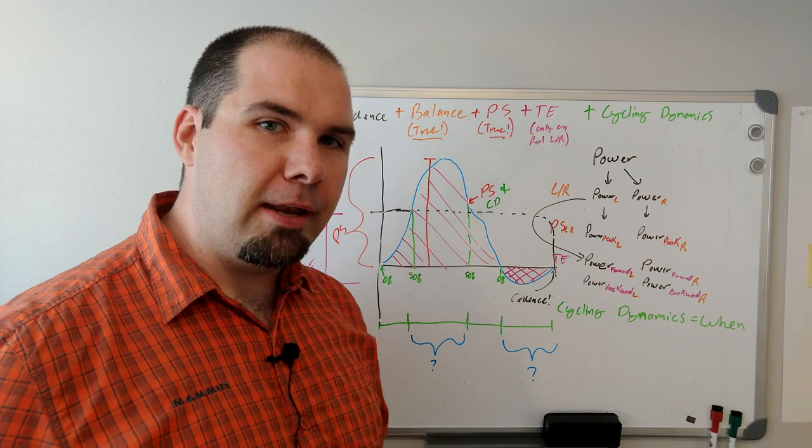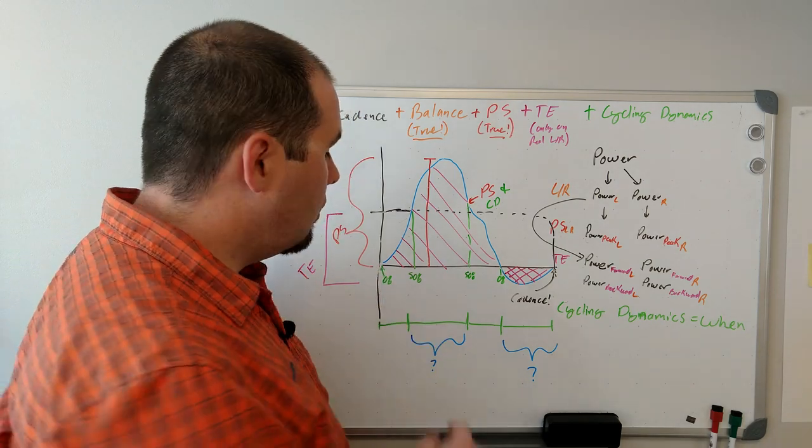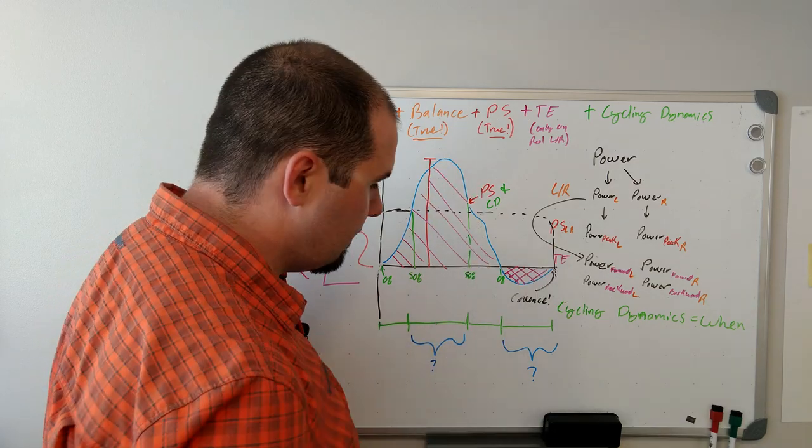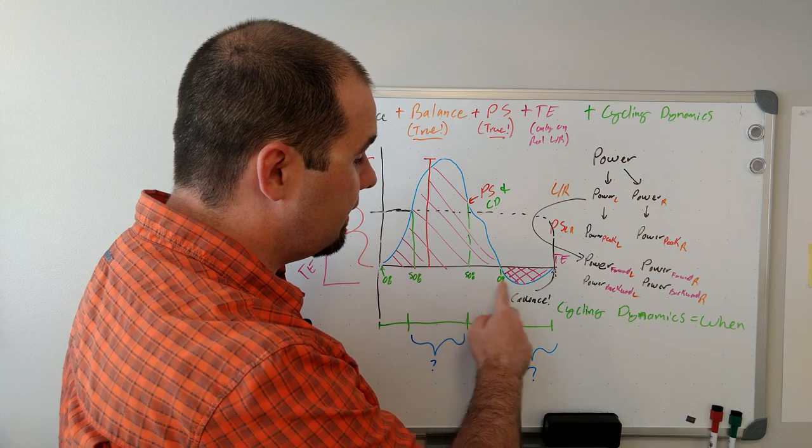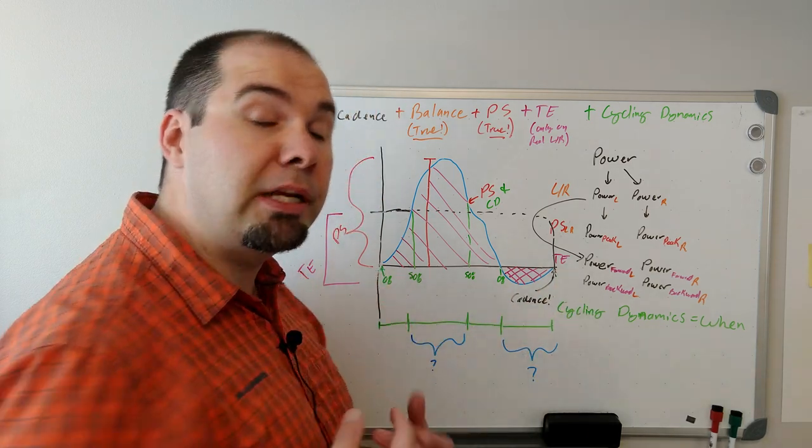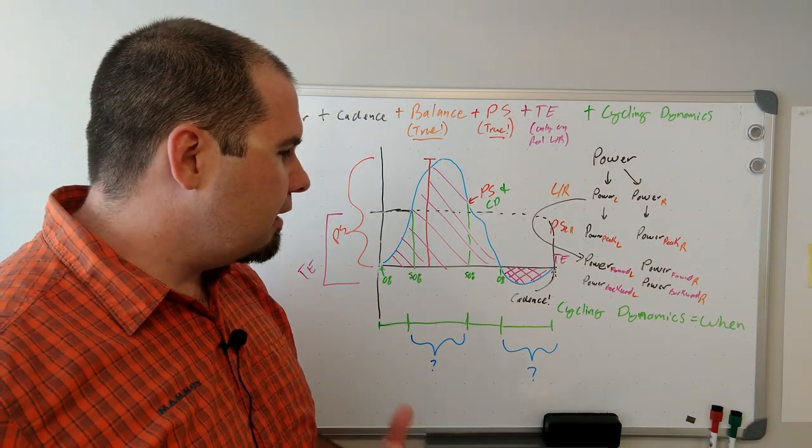However, cycling dynamics talks about the when. When do you cross to zero in the pedal stroke? When do you hit 50% up on the upstroke? And on the end of your power stroke? When do I hit 50% again? When do I hit zero? And we know when it resets because that's just this point over here. So we now have a lot of these whens.